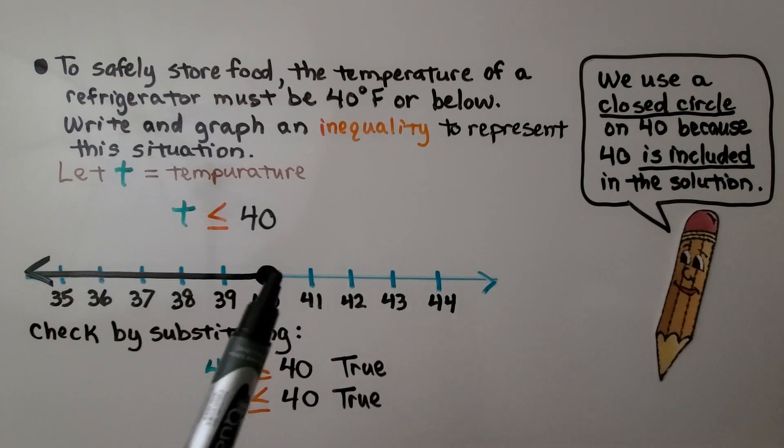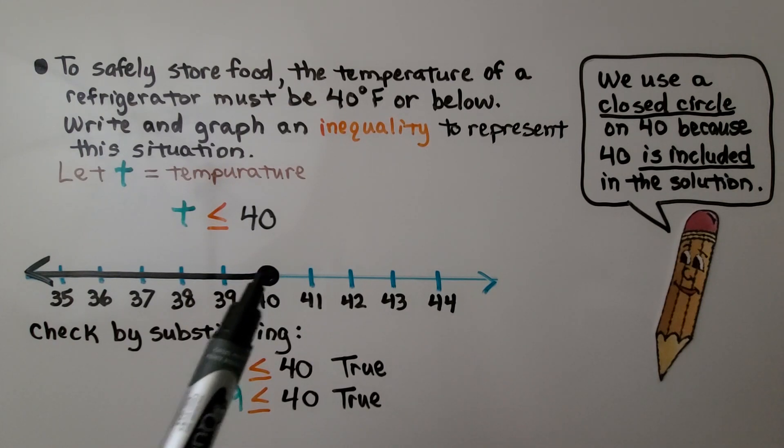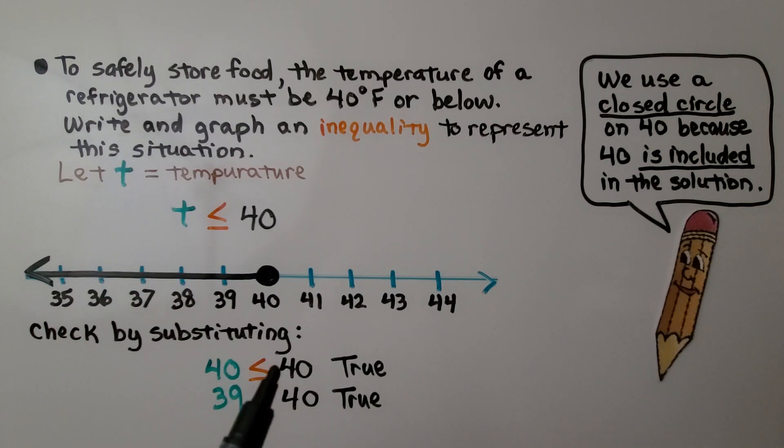We can check by substituting. If we substitute 40 for T, we'll have 40 is less than or equal to 40. And yes, it's equal. So that would be true. And if we use 39, well, 39 is less than 40. So that's true.